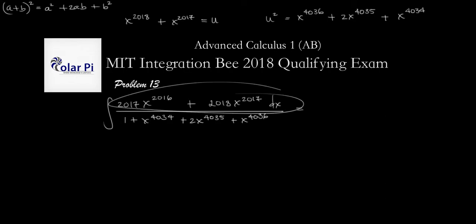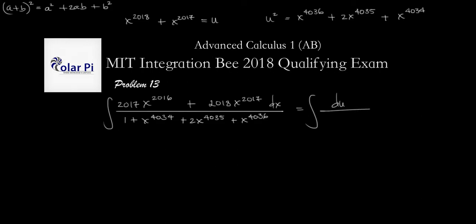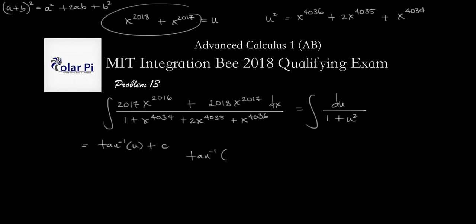Given that the numerator is du, we can rewrite our integral very conveniently as du divided by 1 plus u squared. We know the anti-derivative of this — it's one of our favorites — it's arctan of u. So we get arctan of u plus C, and of course we need our answer in terms of x, so the only thing left is to write arctan of x to the 2018 plus x to the 2017, plus C. The end.